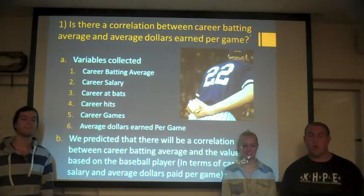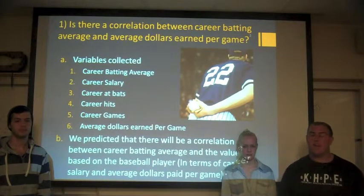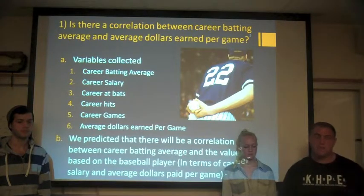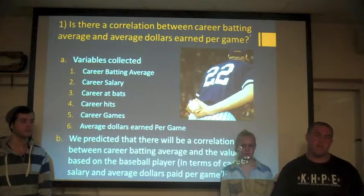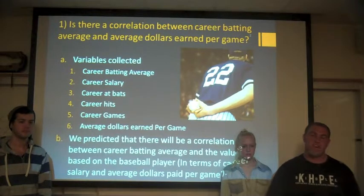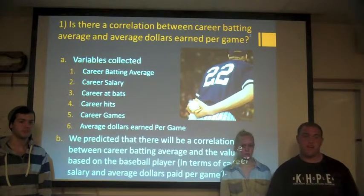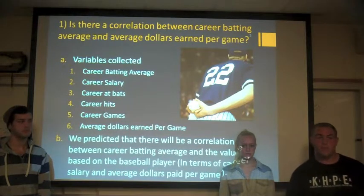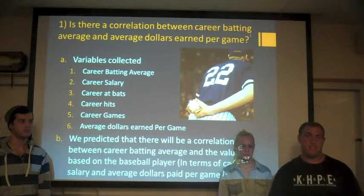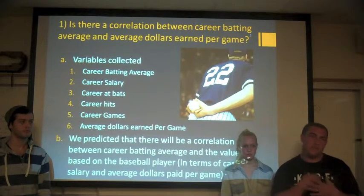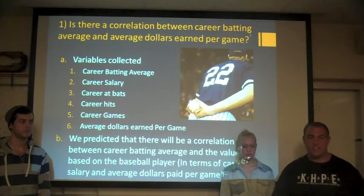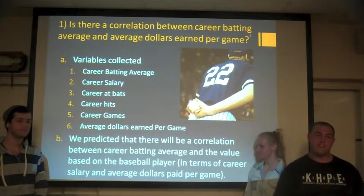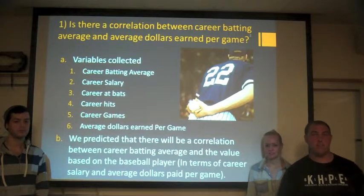Our main question was whether there was a correlation between a player's batting average and the amount of dollars they earned for their lifetime. We're going to look at a number of different variables. The first is career batting average, which is basically the number of hits a player has over the number of opportunities they have to hit the ball. Then we have career salary — the amount of money they make over their entire career. We also look at career at bats, which is the number of opportunities they have to hit the ball, and career hits, which is the number of times they hit the ball and reach first base — not counting walks or being hit by a pitch. Finally, we have career games and the average dollars earned per game. We predicted there would be a big correlation between batting average and lifetime earnings.